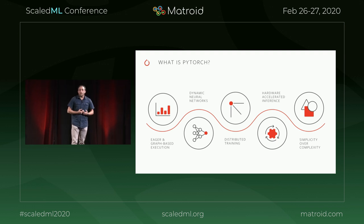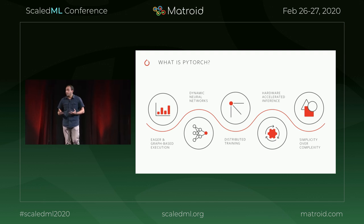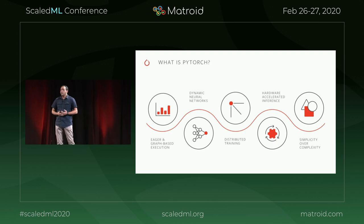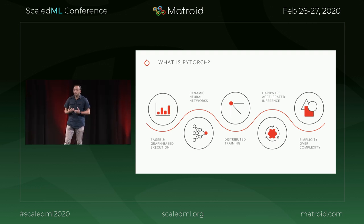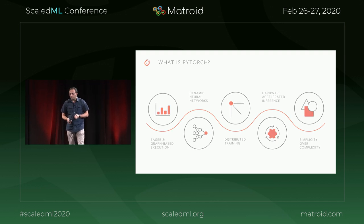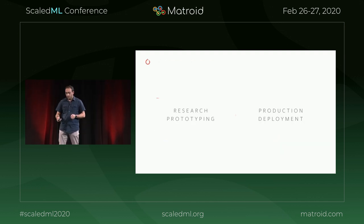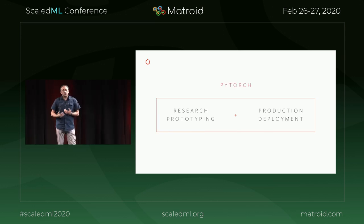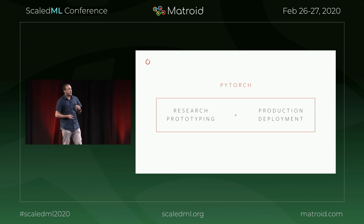PyTorch supports hardware-accelerated inference. It now also works on Google TPUs, giving you speed and efficiency which is really important when you run at data center scale. But the most important thing, as I mentioned, is the simplicity of use and the clear APIs. With all these features, it allows us to go from research prototype to production really easily, which is a very important thing to deploy models at Facebook.